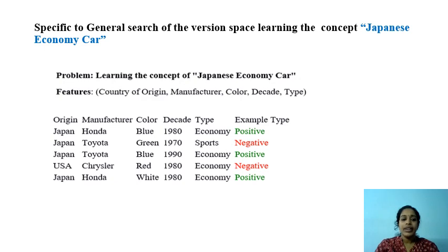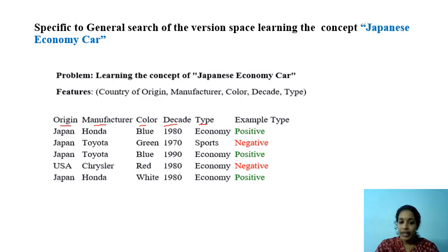Given the training set having five instances and having attributes: origin, manufacturer, color, decade, and type. Here the class label is the example type, which is either positive or negative.